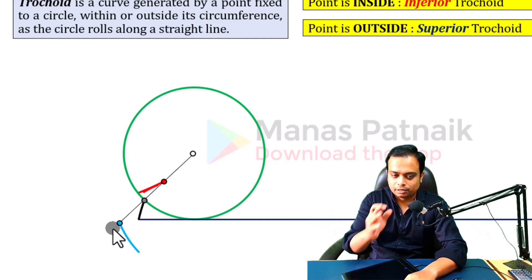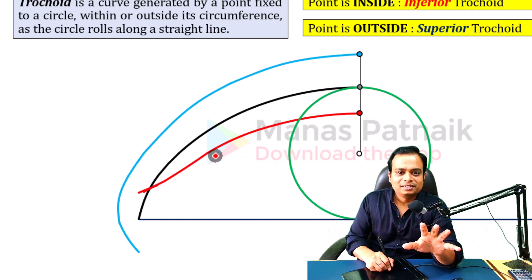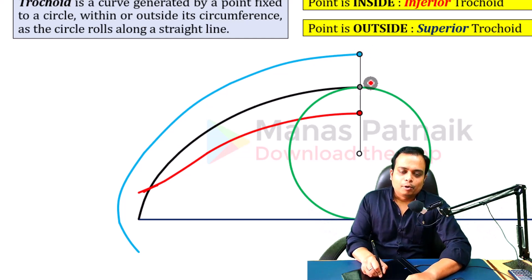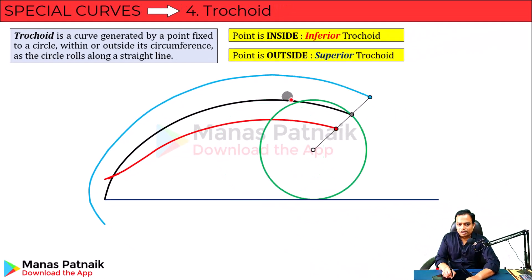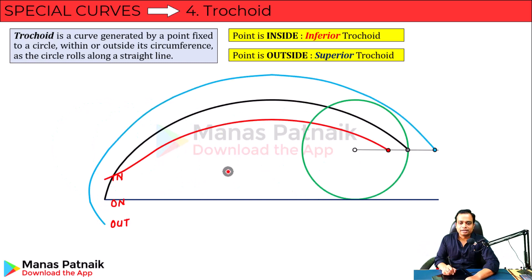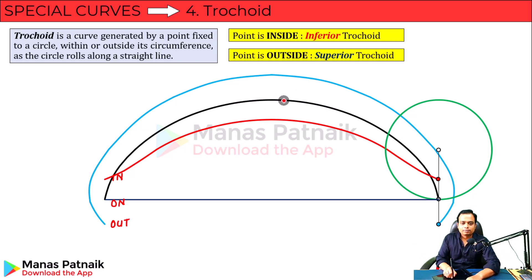For now, just watch this demonstration — step one, two, three, four. You can see how all of these curves are being generated. The red point was inside the circle, and the blue point was outside the circle. Let's revisit: this point is on the circumference, this is outside the circumference, and this is inside the circumference. When you keep track of all these points you generate three different curves. The construction technique for one of them has already been discussed — you can find those videos linked in the description below.